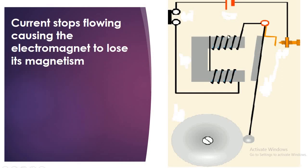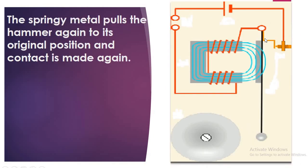Therefore, the current will not flow through the circuit. And the electromagnet loses its magnetism. Upon that, the springy metal pulls the hammer back to its original position.